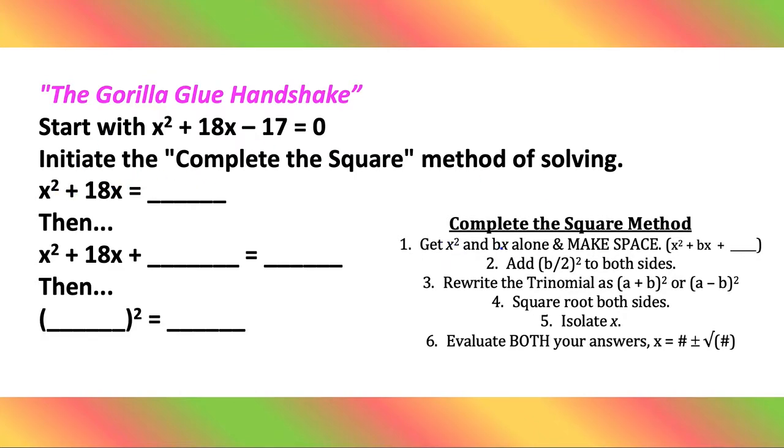The first thing is we need to get x squared and bx alone and make space. So minus 17, you got to go bro. To get rid of that we would add 17 to both sides. So we'd have a positive 17 on the right.